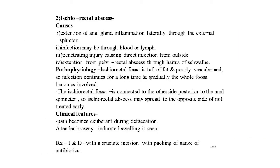The second type is the ischio-rectal abscess, caused by extension of anal gland inflammation laterally through the external sphincter. Infection may also spread through blood or lymph, penetrating injury causing direct infection from outside, or extension from a pelvic rectal abscess. The ischio-rectal fossa is full of fat and poorly vascularized, so infection continues for a long time and the whole fossa becomes involved. As the two ischio-rectal fossae are connected posteriorly, the abscess may spread to the opposite side if not treated early.